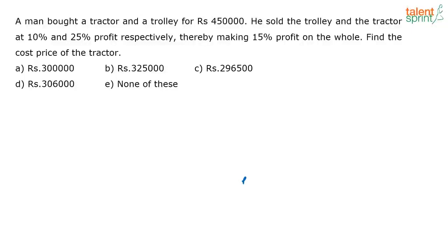A man bought a tractor and a trolley for rupees 4 lakh 50,000. He sold the trolley and the tractor at a profit of 10% and 25% respectively, thereby making 15% profit on the whole. Find the cost price of the tractor.